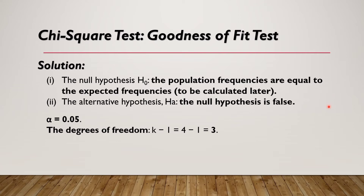First, we set the null and alternative hypotheses. The null hypothesis is that the population frequencies are equal to the expected frequency. The alternative hypothesis contradicts the null. Our given alpha is 0.05. To compute the degrees of freedom, that is k minus 1, where k is the number of categories — so 4 minus 1 equals 3.